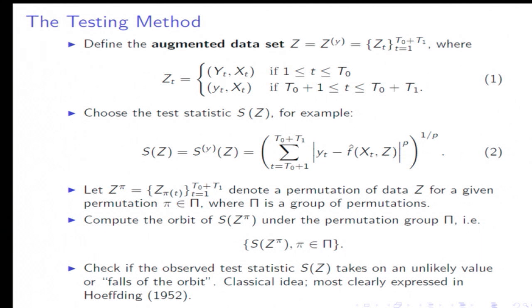Then we're going to do permutations on the statistics. Here Z pi is going to denote a permutation of this data for a given permutation pi that lives in a set capital pi. And pi is going to be a group of permutations.